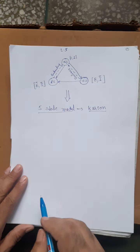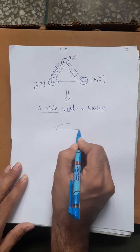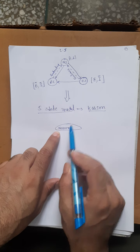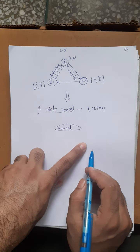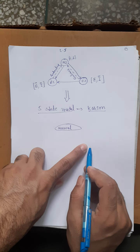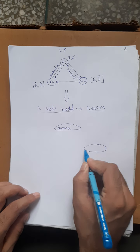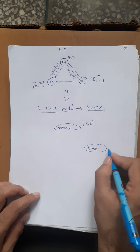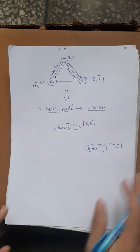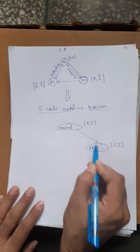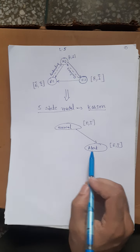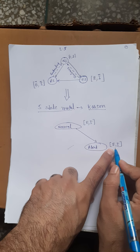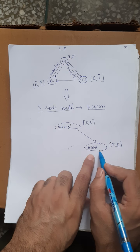In the five-state model, the system first moves from normal to the alert state where an alert signal is given to the operator. In the alert state, both equality and inequality constraints are still satisfied, but they are about to violate. The operator has authority to make adjustments so the system can move back from alert to normal state.